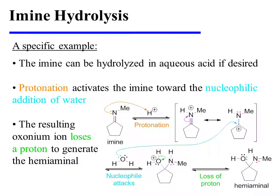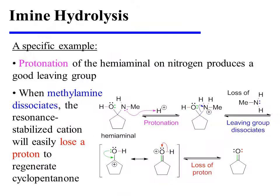The imine could be hydrolyzed in aqueous acid if desired. This process occurs through protonation of the imine, which activates it toward the nucleophilic addition of water. The resulting oxonium ion loses a proton to generate the hemi-aminal. Protonation of the hemi-aminal on nitrogen produces a good leaving group. When methylamine dissociates from the molecule, the resonance-stabilized cation that results will easily lose a proton to regenerate cyclopentanone.